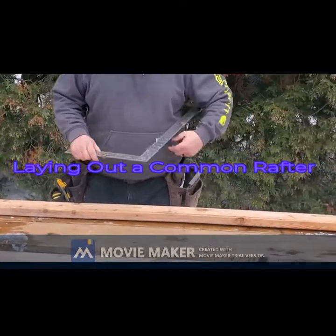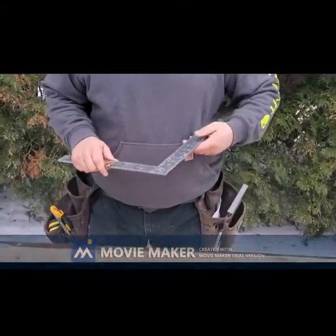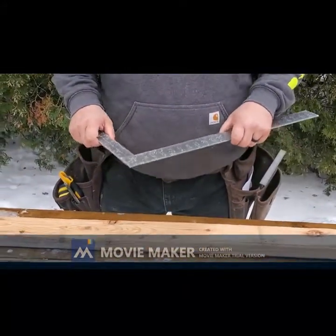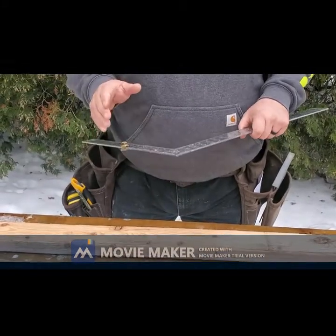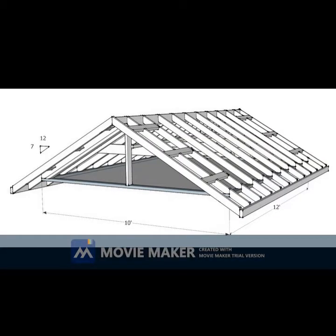We're going over laying out a common rafter today. The roof we're doing is the same one from the shop project. The building is 10 by 12 with a 7-12 slope. The building width is 10 feet, length 12 feet, and it's a gable roof. The triangle on the sketch shows the 7-12 slope. Our building has a 10-foot span, so dividing by 2 gives us a 5-foot run. All our calculations are based off a 5-foot run and the 7-12 slope.